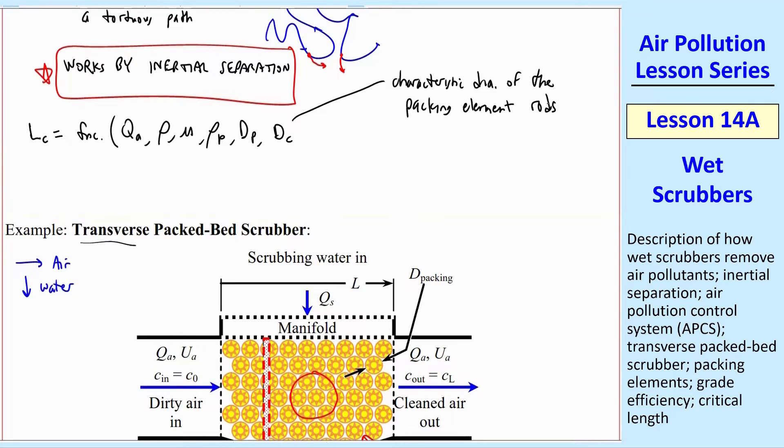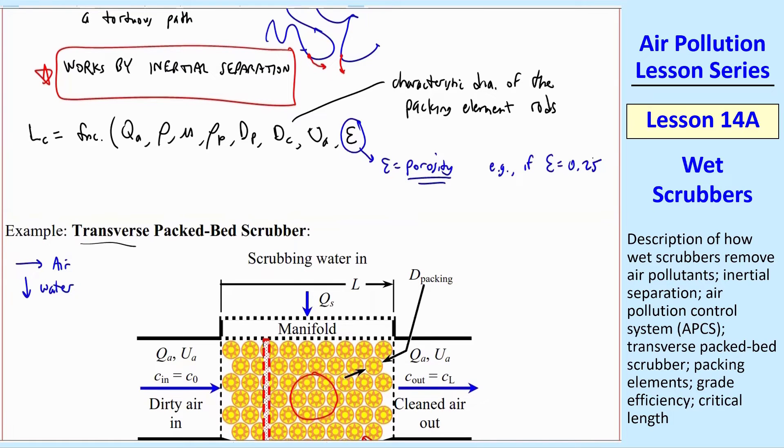UA, epsilon. Epsilon is the porosity of this whole packed bed, including the water. For example, if epsilon is 0.25 or 25%, it means 25% of the cross-sectional area is open for the air to flow through. 75% is blocked either by the packing element material itself or the water that's surrounding it.